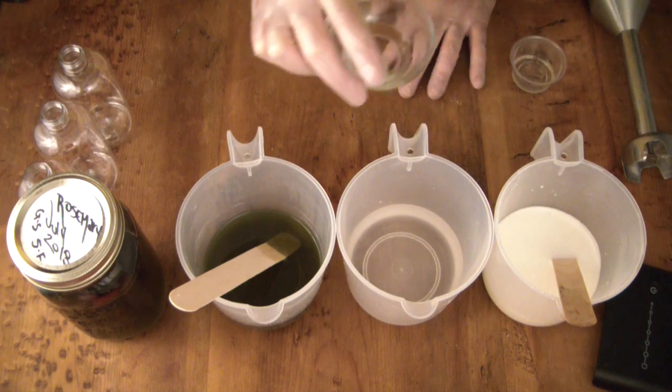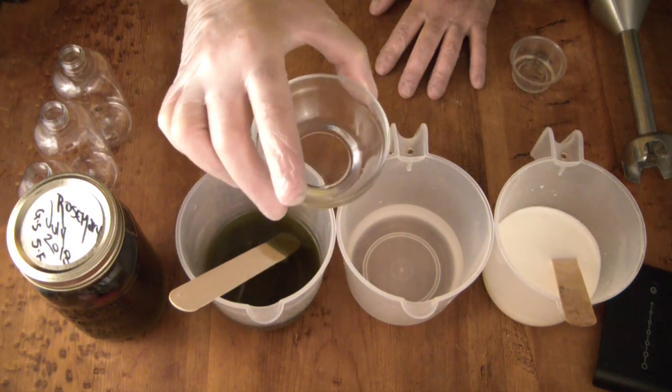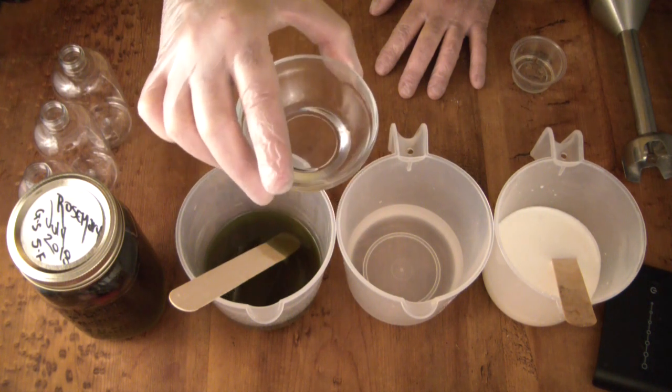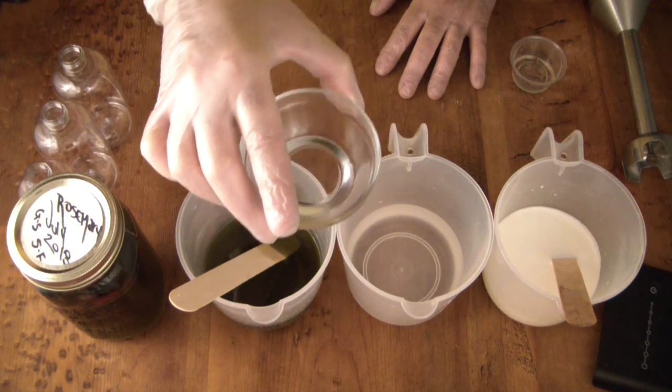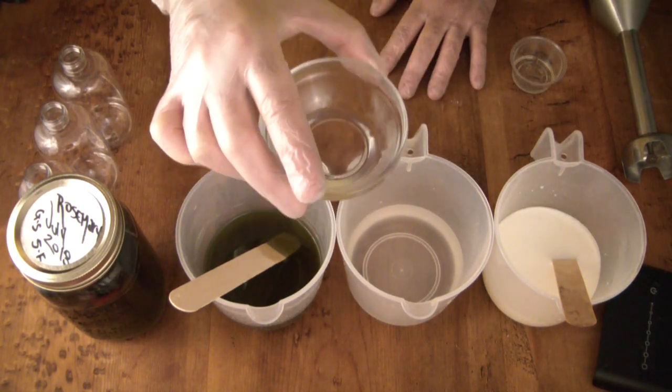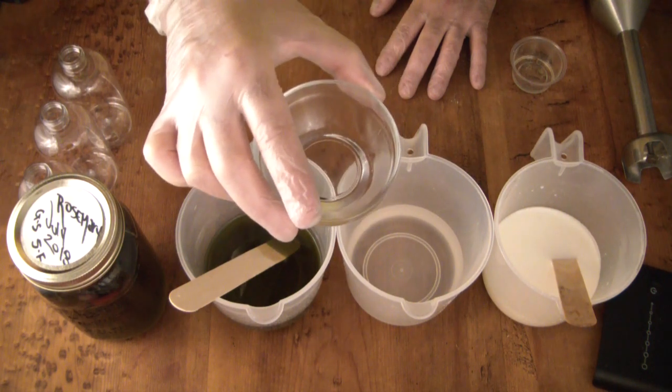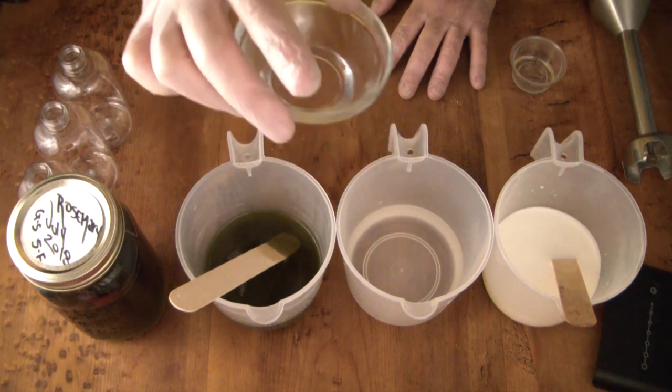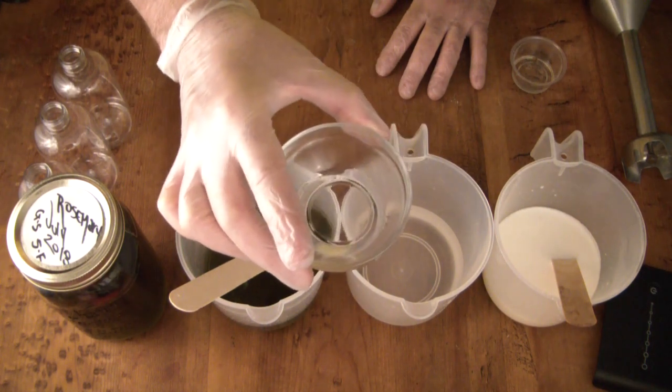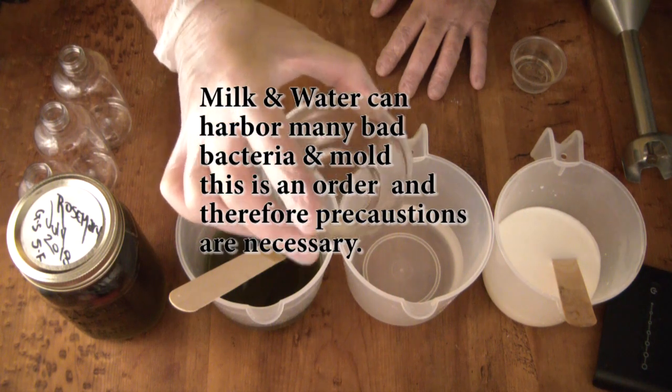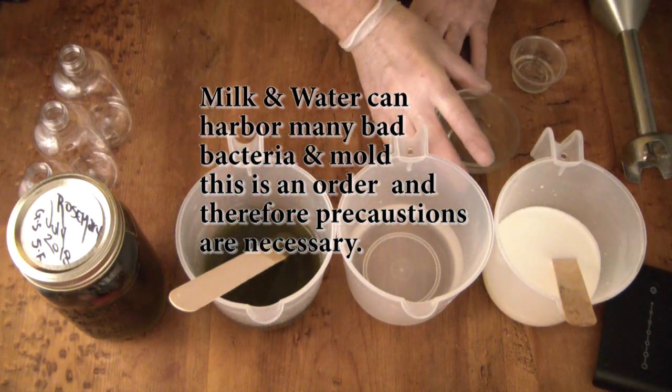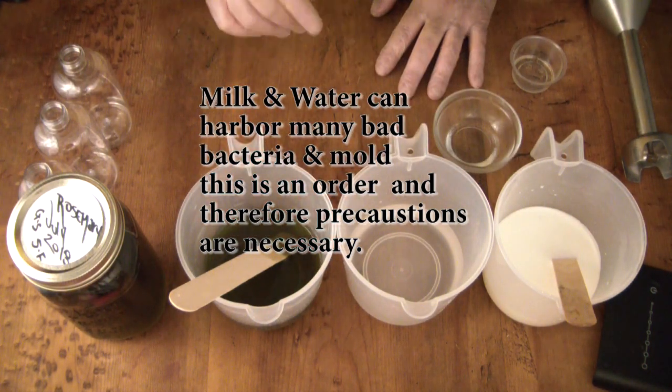In here I have vitamin E and a bit of phenonyp, which is a preservative. Now the reason why I'm using a preservative in this is because of the water. This is mostly vitamin E - this is 0.2 ounces of phenonyp. This is one of the only times you'll see me use a preservative, and it's in this lotion.